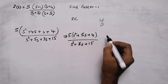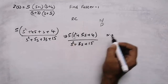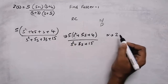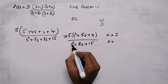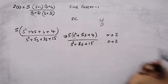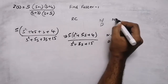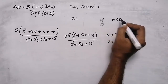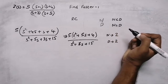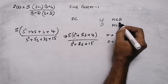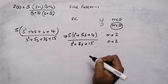The degree of numerator is 2 — the highest power of s is 2. The degree of denominator is also 2. But for doing partial fraction, the degree of numerator should be less than the degree of denominator. Since they are equal here, we can't do partial fraction directly. First, we need to do long division, then partial fraction.